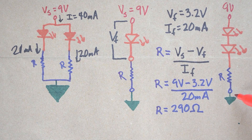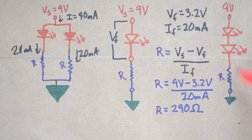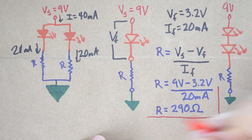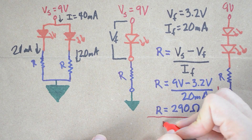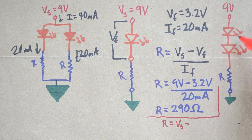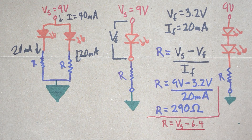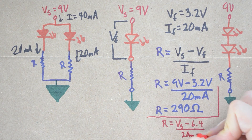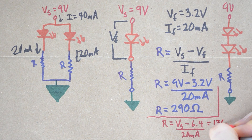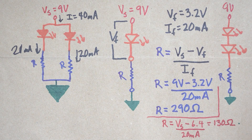If we decide to go with series LEDs, we're going to change our resistor to get the same amount of luminescence. If we keep 290 ohms, we can't pull near as much current as we need — we need 20 milliamps. So we use the formula again: resistance equals voltage source minus forward voltage. But now we have two LEDs, each with a forward voltage of 3.2 volts, so we subtract 6.4 volts total divided by 20 milliamps. What we end up with is a resistance of 130 ohms.